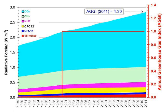Water vapour accounts for the largest percentage of the greenhouse effect, between 36% and 66% for clear sky conditions and between 66% and 85% when including clouds. Water vapour concentrations fluctuate regionally, but human activity does not directly affect water vapour concentrations except at local scales, such as near irrigated fields.